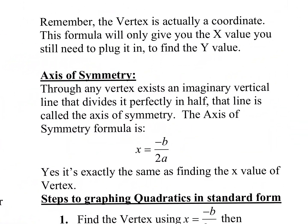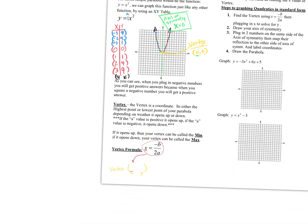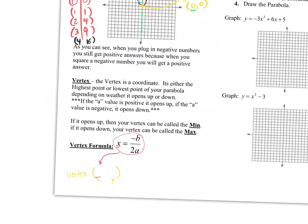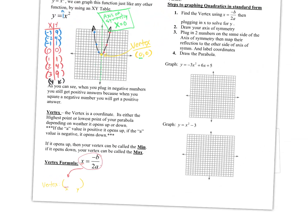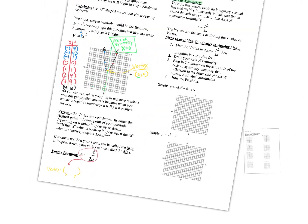The vertex is actually a coordinate — an x and y value. This formula will only give you the x value; you still need to plug it in to find the y value. The axis of symmetry is the vertical line — I usually draw it green and dotted — that passes through the vertex of any parabola, cutting it perfectly in half. The formula for the axis of symmetry is the same as the formula for the x value of the vertex.